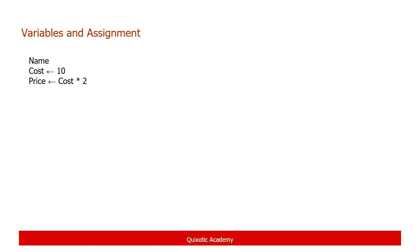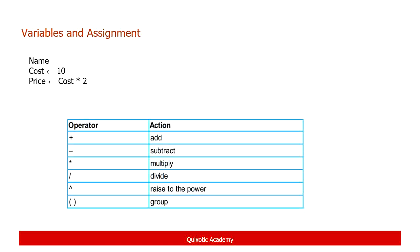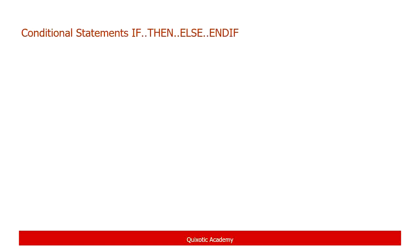In pseudocode we write variables by keeping their first letter capital — for example N for Name, C for Count. Assignment is when you assign a value into a variable, and it is done using a left-handed arrow. Mathematical expressions go on the right side of the assignment. Common operators are: plus for addition, minus for subtraction, asterisk for multiplication, slash for division, the hat symbol for raise to the power, and brackets to group expressions.